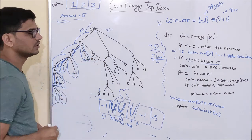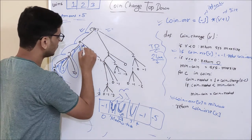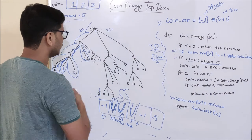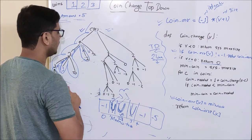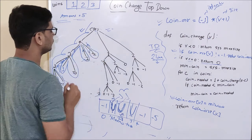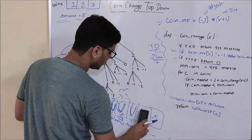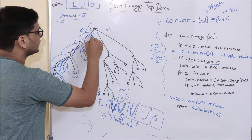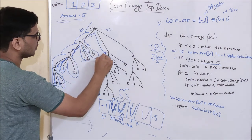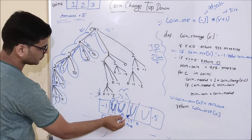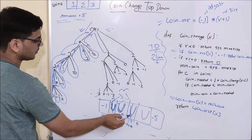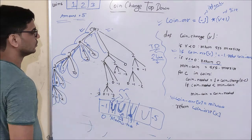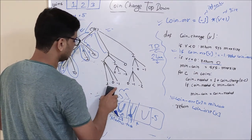Then 2 will return its answer to 4. And 4 will again call 1. As you can see, we have already updated it, so this function call will not be made — and 1 will return its answer to 4. So 4 will be updated in the table. After that, 4 will return its answer to 5. And 5 is going to call 3. We will check using this line in the memo table whether we have calculated it or not. As you can see here, it is updated — so this whole subtree will not grow.